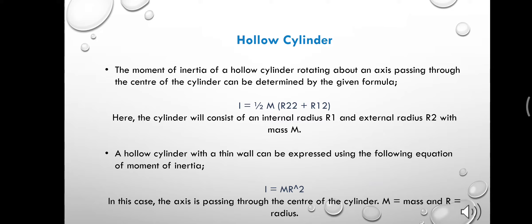The moment of inertia of a hollow cylinder is given by the formula I equals to half M(R2 square plus R1 square), where R1 is the internal radius and R2 is the external radius.